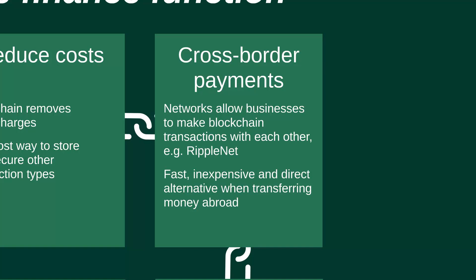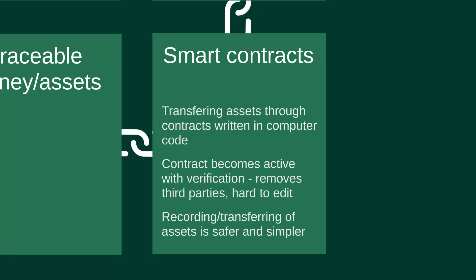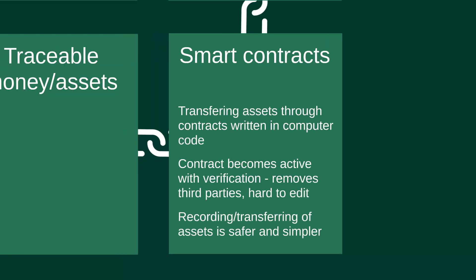The next benefit is smart contracts. Smart contracts use blockchain technology to allow the transfer of any assets — not just currency — through a contract written in computer code. The smart contract will only become active once it has been verified by a network of computers. This removes the need for a third party and is extremely difficult to tamper with, making the recording of the transfer of assets much simpler and safer.